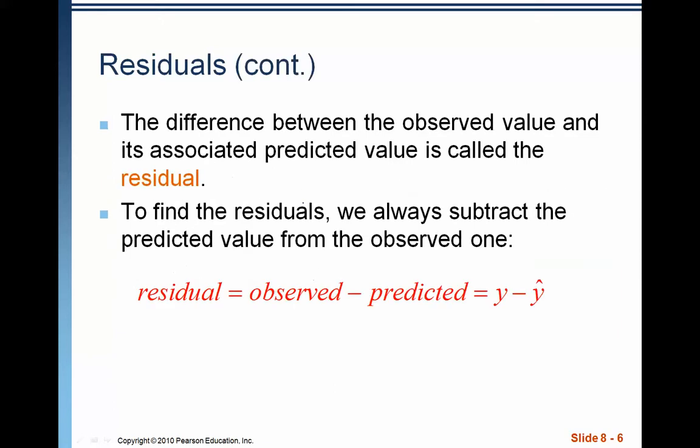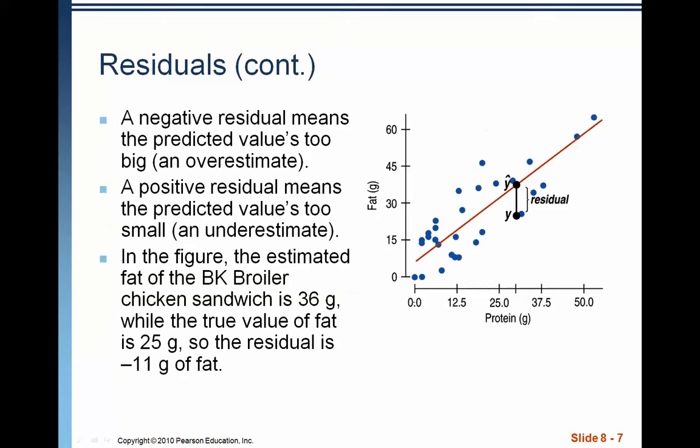The residual, as you can see from the formula, the residual is the observed value minus the predicted value. Meaning the point that I'm seeing on the scatter plot minus the point given to me by the model, given to me by the line. So that is called a residual, the difference between them.